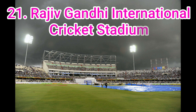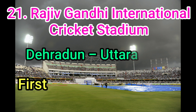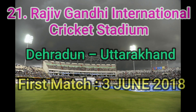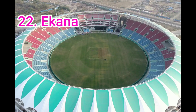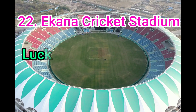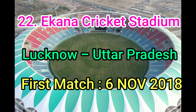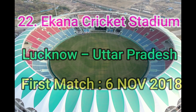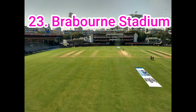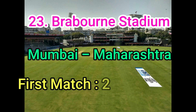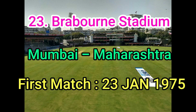Rajiv Gandhi International Cricket Stadium, Dehradun, Uttarakhand. First International Match played on 3rd June 2018. Ekana Cricket Stadium, Lucknow, Uttar Pradesh. First International Match played on 6th November 2018. Brabourne Stadium, Mumbai, Maharashtra. First International Match played on 23rd January 1975.